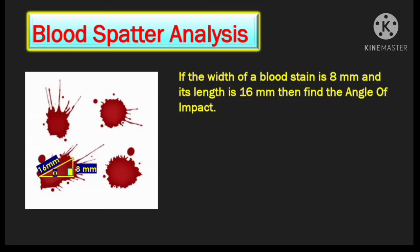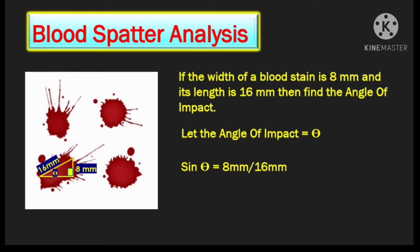We can say that sine theta is opposite side upon the hypotenuse, so sine theta is 8 upon 16, giving an angle of impact of 30 degrees. With this angle, forensic experts can do further analysis. In this way, trigonometry is very useful in criminology.